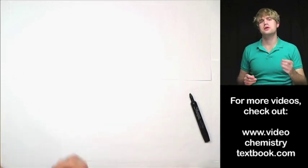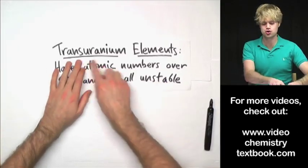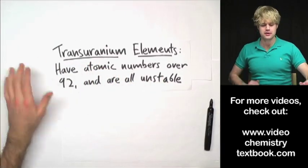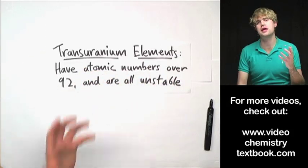So any element with an atomic number over 92 is known as a transuranium element. These guys have atomic numbers over 92 and they're all unstable.